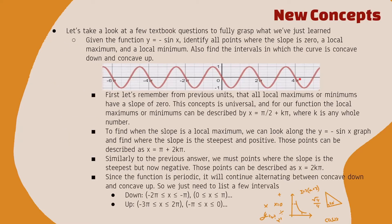Now that we have that quick review, let's talk about our new concepts. I took a question out of the textbook: we're given the graph of the function y = −sin(x). We need to identify all the points where the slope is zero, a local maximum, and a local minimum. We also need to find the intervals in which the curve is concave down and concave up. Let's do the slope of zero first.